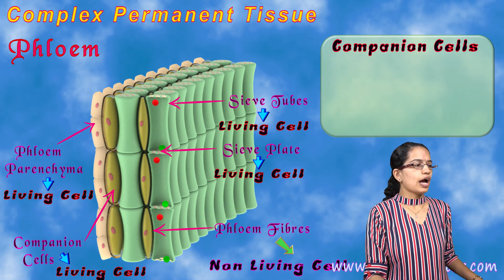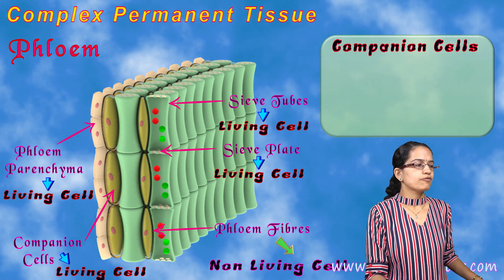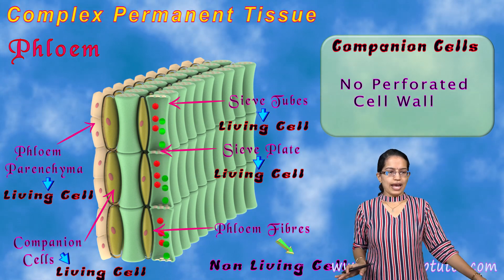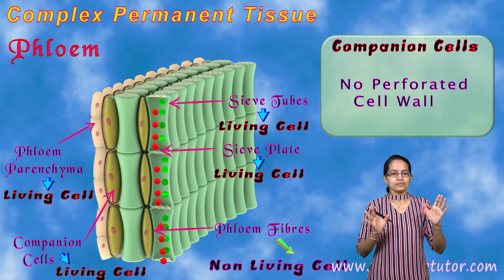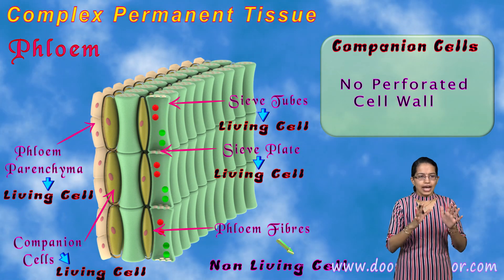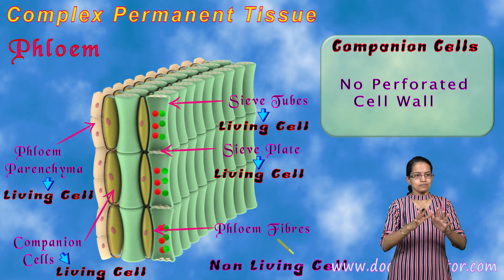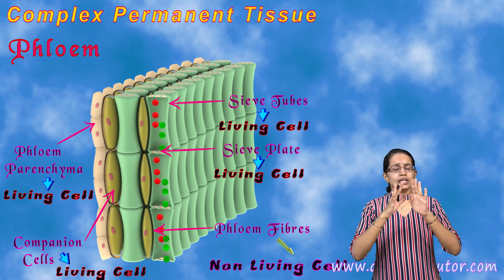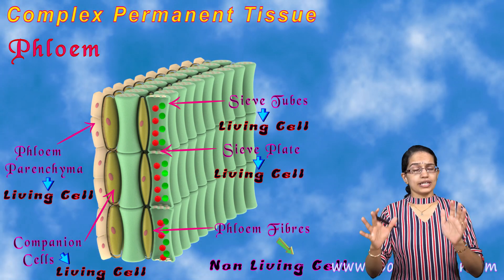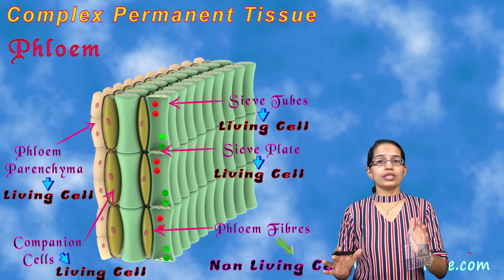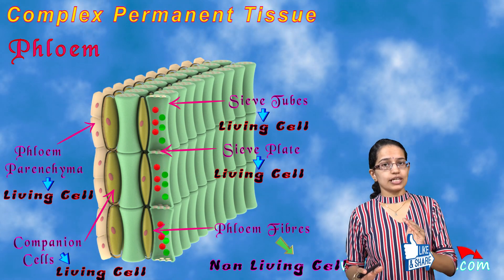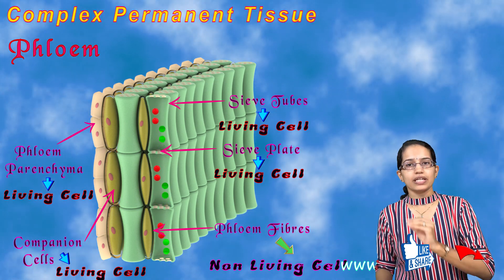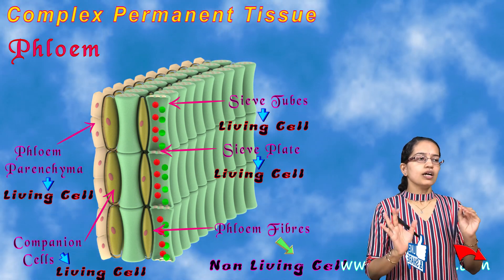Companion cells have no perforated walls. The main function of phloem is the conduction of food from the leaves to the various parts of the plant.